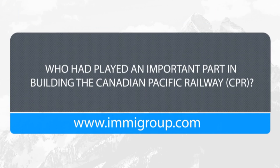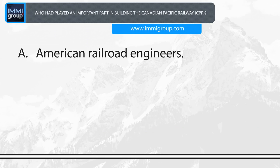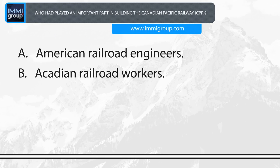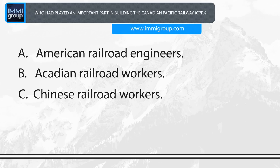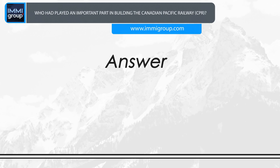Who had played an important part in building the Canadian Pacific Railway? A. American railroad engineers. B. Acadian railroad workers. C. Chinese railroad workers. D. Afro-American slaves. Answer: Chinese railroad workers.